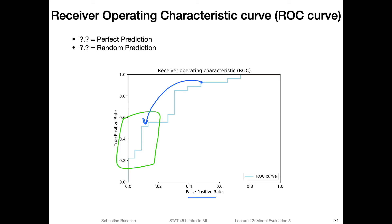Now let's consider how a perfect classifier and a random classifier would look on the ROC curve. If we had a classifier that predicts class labels randomly in a balanced class setting, how would that random prediction look? And how would a perfect classifier look in terms of the curve? Maybe pause and think about it.